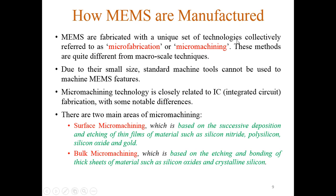MEMS are fabricated using a unique set of technologies collectively referred to as microfabrication and micromachining. Microfabrication comes from the electronics side and micromachining from the mechanical side. These methods differ from macro-scale techniques because standard machine tools cannot be used due to the small feature sizes. There are two main areas of micromachining: surface micromachining, based on successive deposition and etching of thin films such as silicon nitride, polysilicon, silicon oxide, and gold; and bulk micromachining, based on etching and bonding of thick substrates of material such as silicon oxides and crystalline silicon.